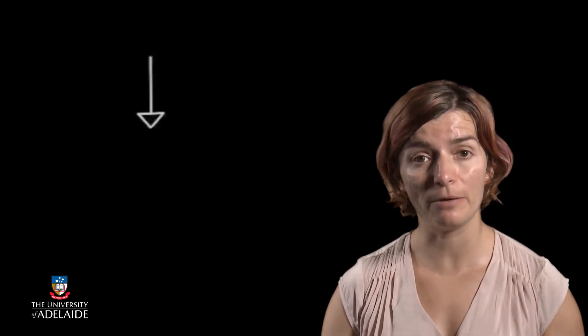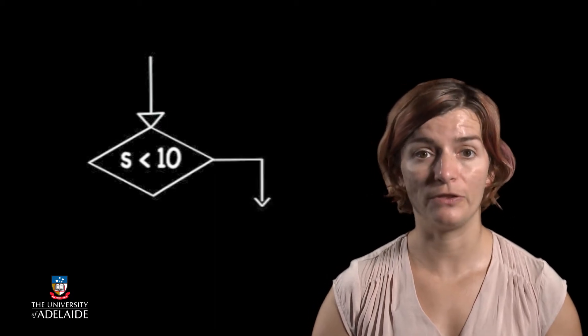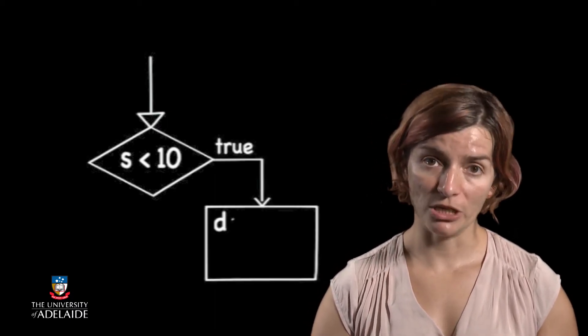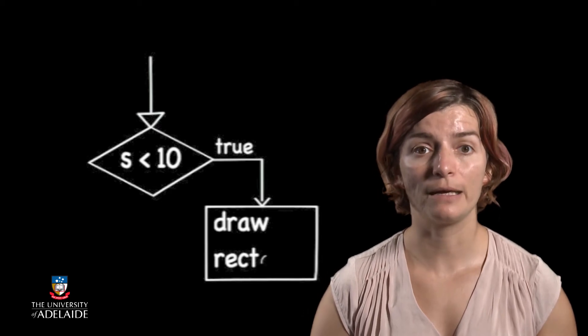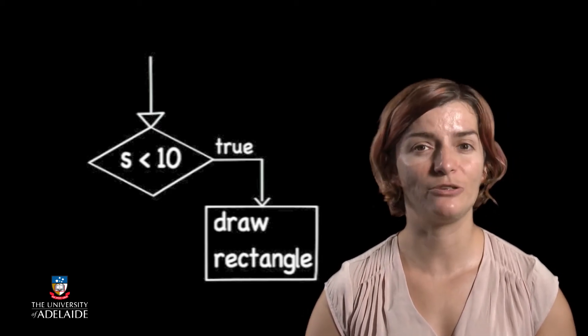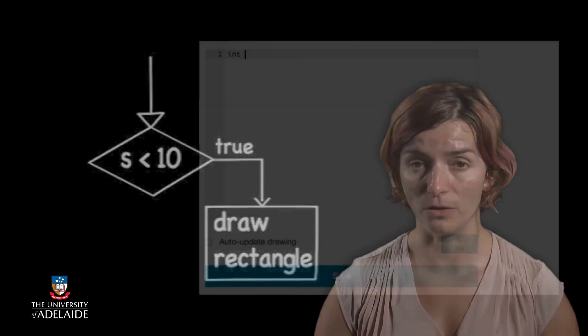So let's start with a flow chart showing our choice. Let's say we set an initial parameter called s. We will draw a rectangle if this parameter is smaller than 10. So if we initialize s with 8, then the rectangle will be drawn. This flow chart can be easily translated into an if statement in our code.